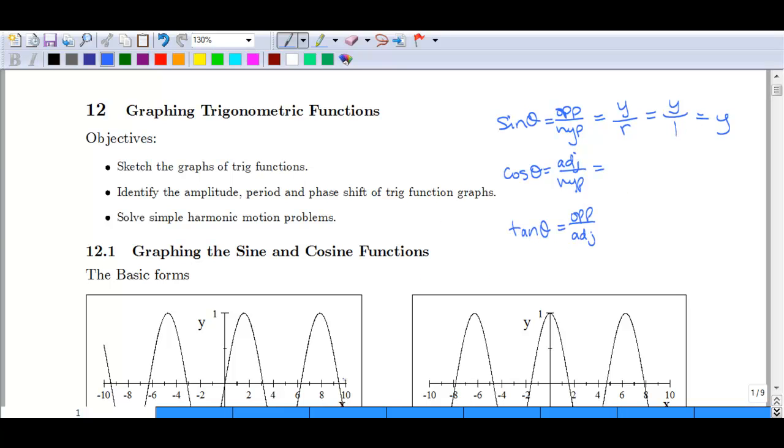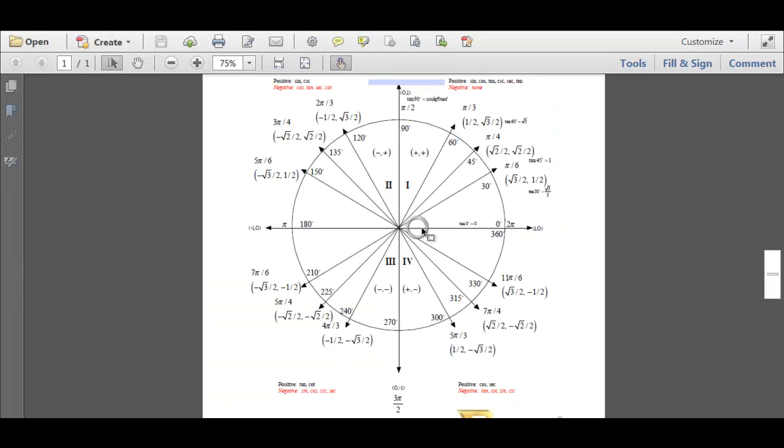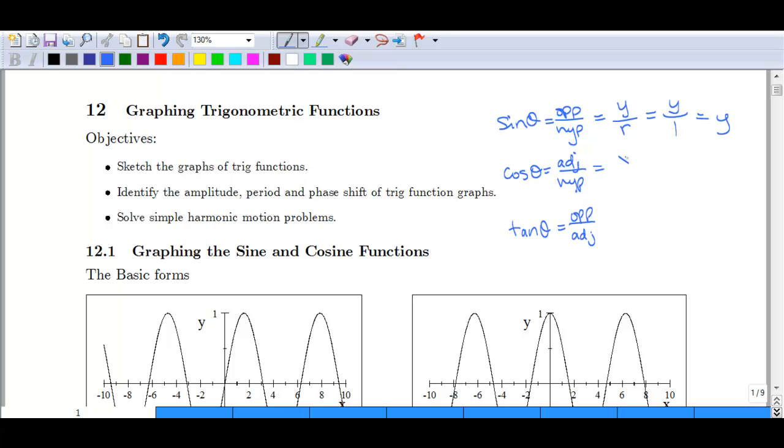Similarly, for cosine, we said that was that base there is the adjacent side. So we would have x over r, and again, we've got a unit circle, so r is 1, and so we just end up with x. Finally, tangent ends up being that opposite y over the adjacent x, and we can just leave it as is there.